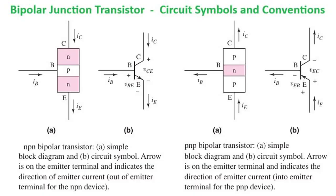A BJT, or Bipolar Junction Transistor, is a current-controlled device with three terminals: base, collector, and emitter. A small current at the base controls a larger current flowing between collector and emitter.